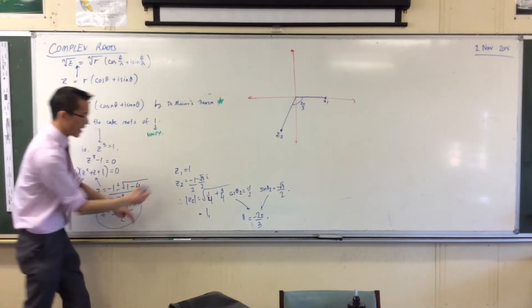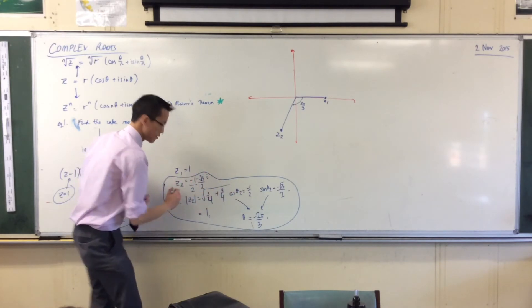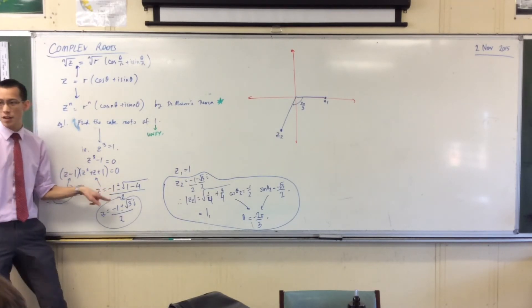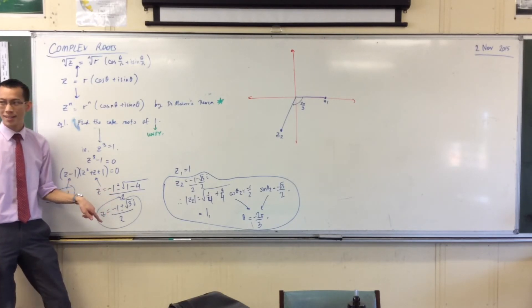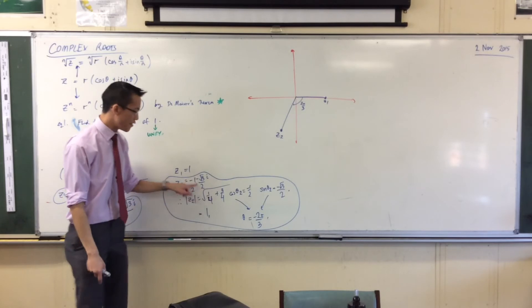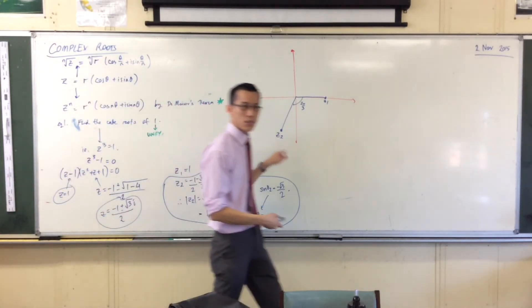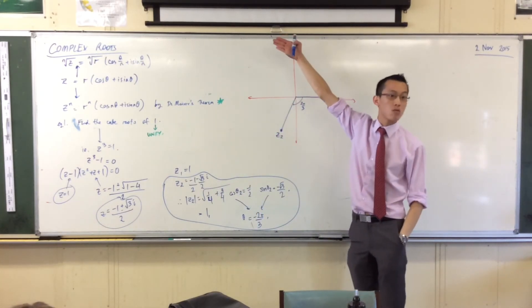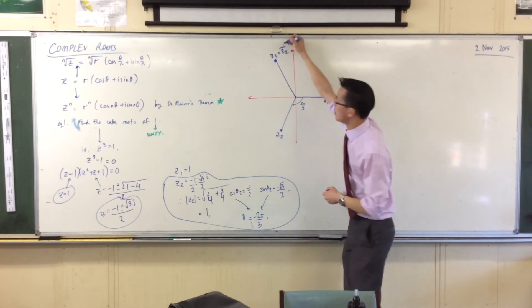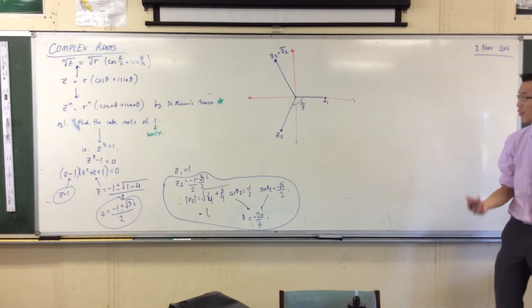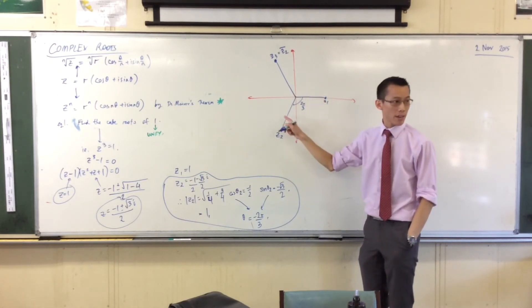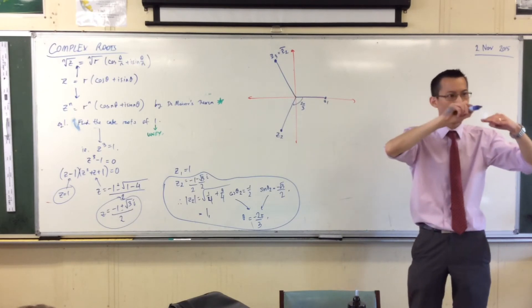I could go through this whole process again to get Z3 in mod arg form, but I'm not going to. Because Z2 and Z3 are actually very closely related. Can you see that they are conjugates of each other? The first one was minus 1 minus root 3 on 2i, and the next one will replace that with a plus. So geometrically, where's the conjugate of Z2 on here? It's reflected across the real axis. Because it's the reflection, the argument here is minus 2 pi on 3. So what's the argument of Z3? Just 2 pi on 3. I'm going anti-clockwise.